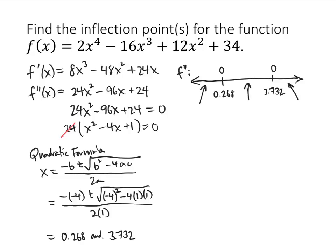Picking a number less than 0.268, we could pick 0. f double prime of 0 works out to be 24, and that's positive. Picking a number between 0.268 and 3.732, how about 1? When we plug 1 into our second derivative, we get negative 48, and that's negative. So that tells us right away that we've got an inflection point at this first x value, because f double prime changed from positive to negative.